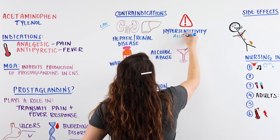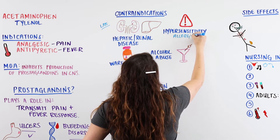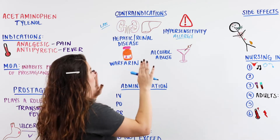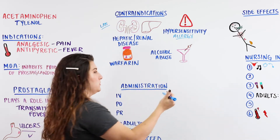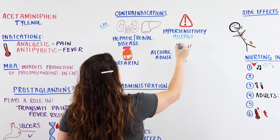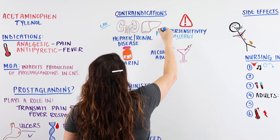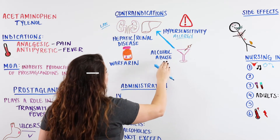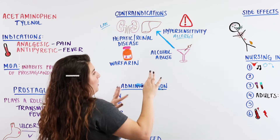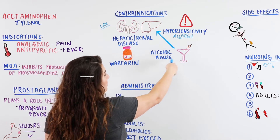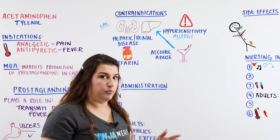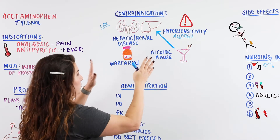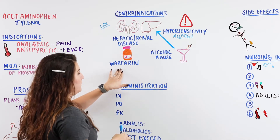Another contraindication is hypersensitivity — if they've had Tylenol before and have any type of allergy or issue with acetaminophen as the active ingredient, let's try not to give them this medication. You also want to think about alcohol abuse. Alcohol is processed through the liver, so if they have a history of alcohol abuse, they probably have some type of kidney or liver disease.